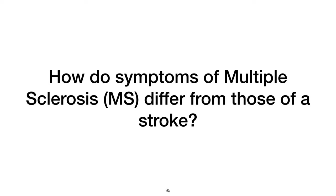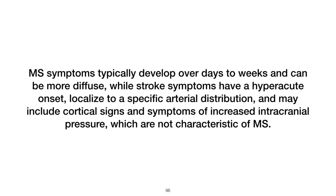How do symptoms of multiple sclerosis (MS) differ from those of a stroke? MS symptoms typically develop over days to weeks and can be more diffuse, while stroke symptoms have a hyperacute onset, are localized to a specific arterial distribution, and may include cortical signs and symptoms of increased intracranial pressure, which are not characteristic of MS.